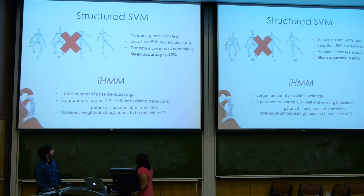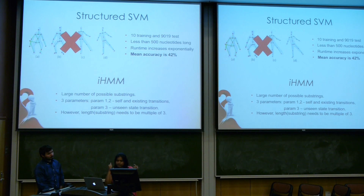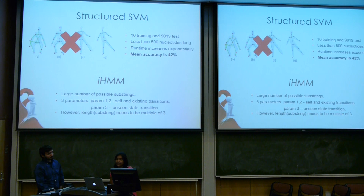Also, at least theoretically, we tried to fit the hidden Markov model to our problem so that in the end we could just end up learning three parameters. However, the problem we faced was that if we use the hidden Markov model as it is, it would result in states that were substrings of variable length. But to solve our problem, we need substrings whose length is multiples of three.